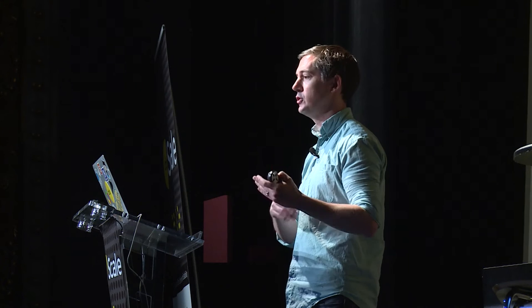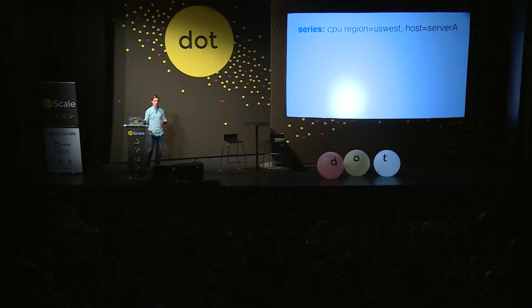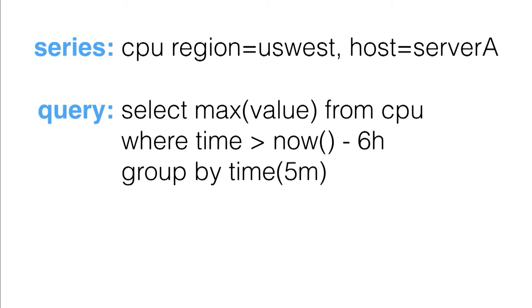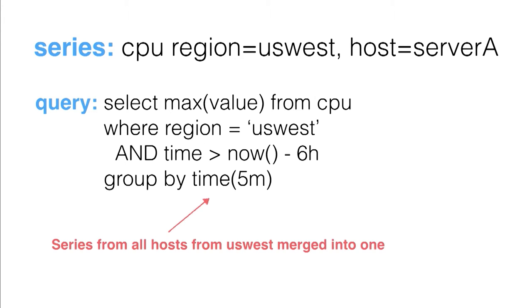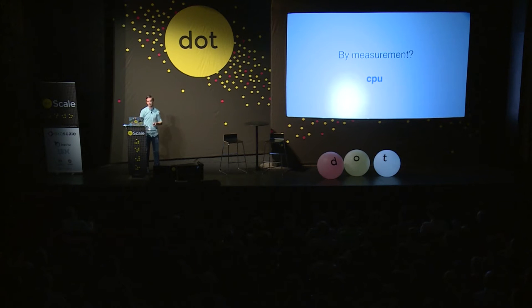A common query would be: select the max value from CPU for the last six hours in five-minute windows. Notice this query gets all hosts from US-West merged into one series, so we're range scanning over a lot of data. The question in a distributed system is how do we distribute the data? If we do it by measurement — everything for CPU goes to one server — we've created a bottleneck for both writes and reads. If we do it by measurement plus tags, the problem is your series grows indefinitely.